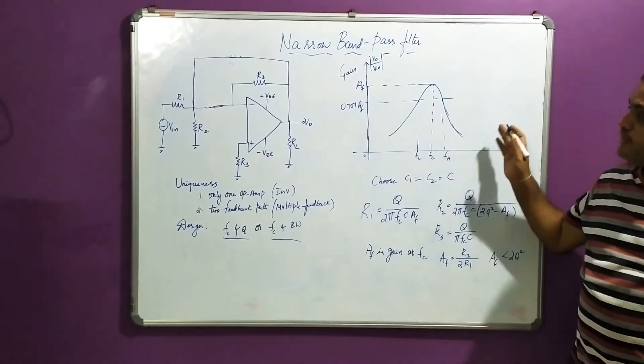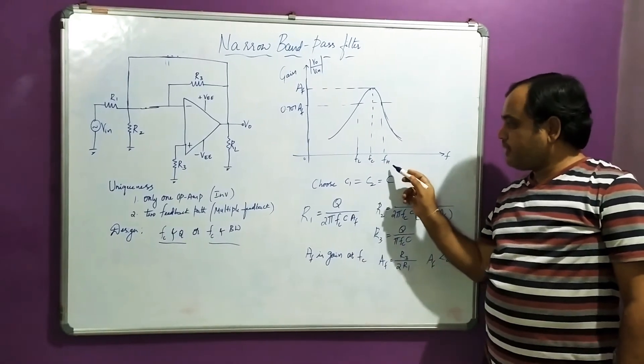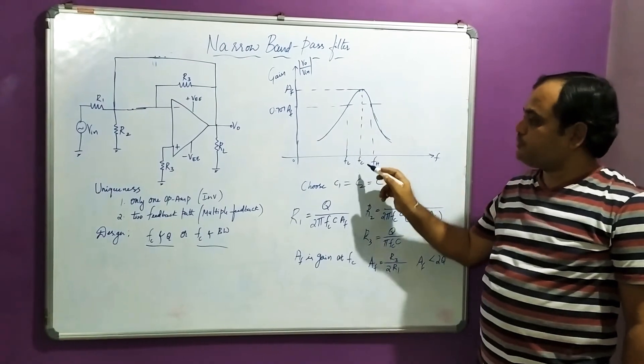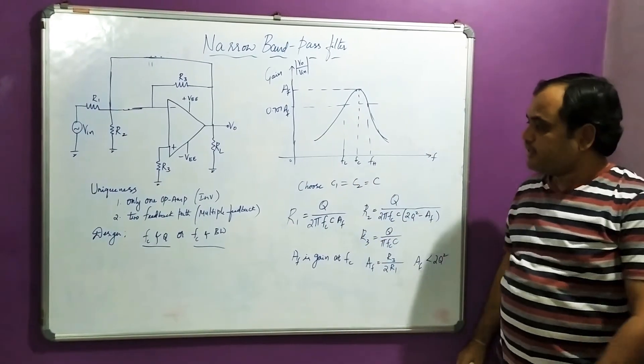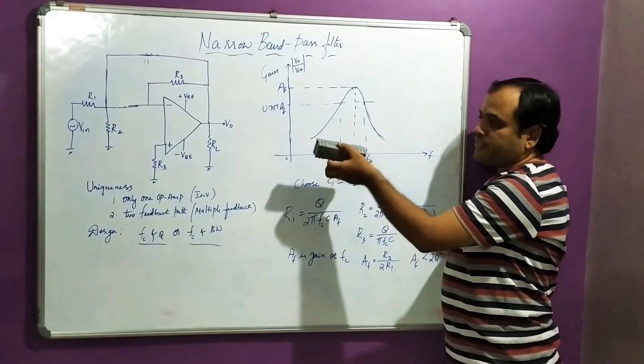When you come to frequency response, it has lower frequency response. This is the range and the higher frequency cutoff. The center where maximum gain has been observed is called center frequency. Now the design part tells that I am going to choose all the capacitors the same.